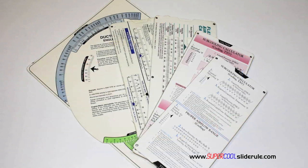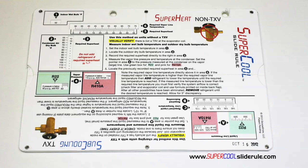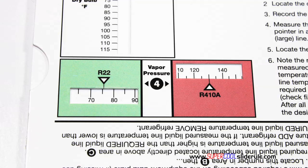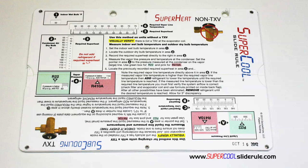Historically, technicians have carried four or five different slide rules — one for R22, one for R410A, one for metal duct sizing, one for flexible duct sizing, and yet others for diagnostics or troubleshooting. Thankfully, those days are gone. This one tool will allow you to charge a system with R22 or R410A in either the superheat or sub-cooling method.